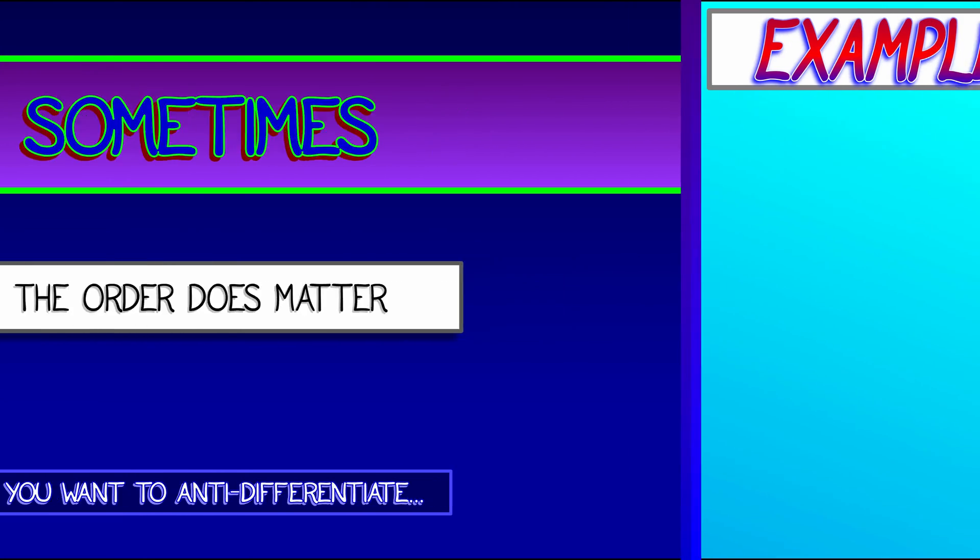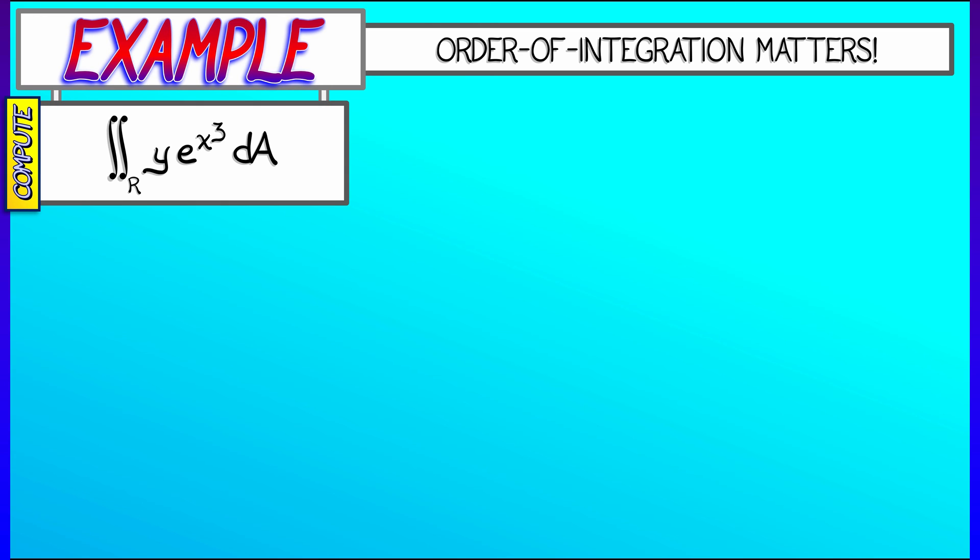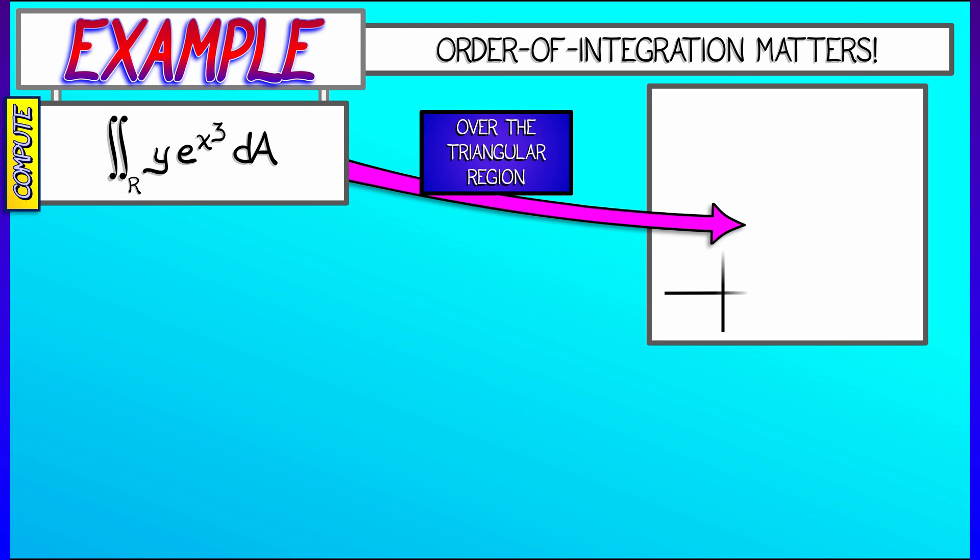Here's the standard, the canonical example that everybody does. Consider the double integral of y times e to the x cubed over the region in the plane given by a triangle with vertices at (0,0), (1,0), and (1,2).